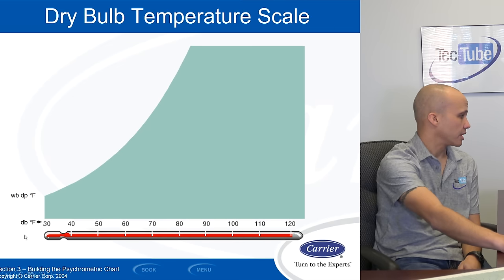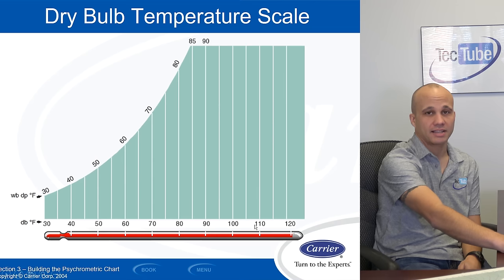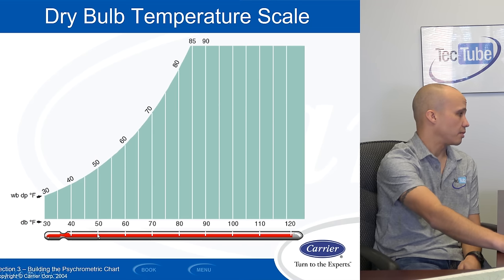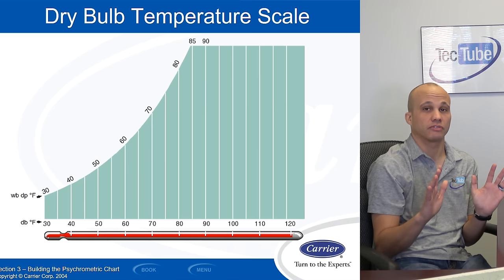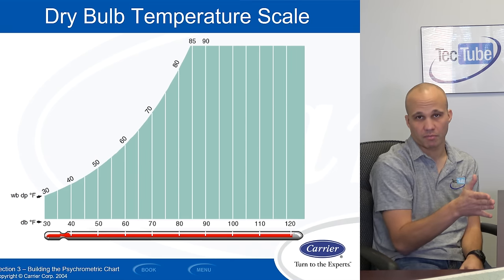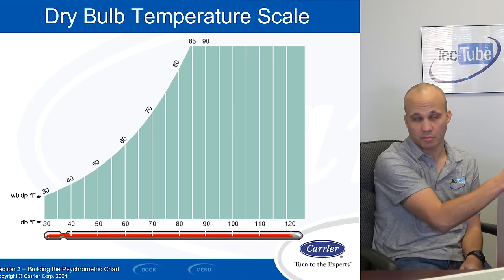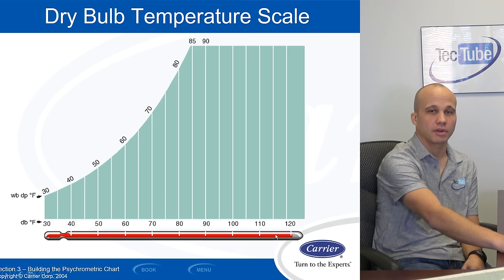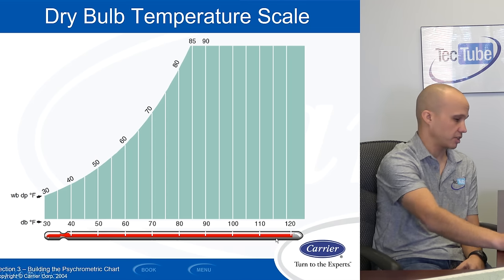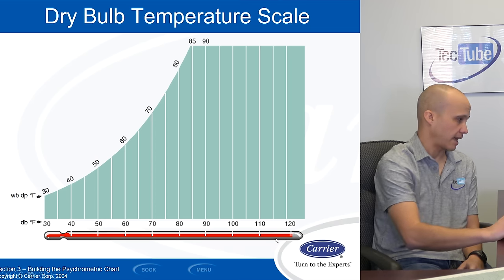So our chart, we build it up from scratch. So along the bottom axis here, we have our dry bulb temperatures. Dry bulb means, as the name would imply, there's no moisture involved in the discussion. And if you have a dry bulb thing, you know, there's going to be a wet bulb thing in a little bit here. So dry bulb is just straight up temperature. If I had an old school mercury thermometer, it'd be dry bulb, just like we're showing here. So that goes along the bottom axis.